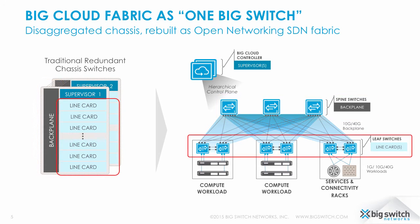The top-of-rack leaf switches correspond to the line cards. If you need more ports in a traditional switch, you add a line card. In the Big Cloud Fabric, you add leaf switches. Essential to this disaggregated architecture is a Clos topology interconnecting the leaf and spine switches.